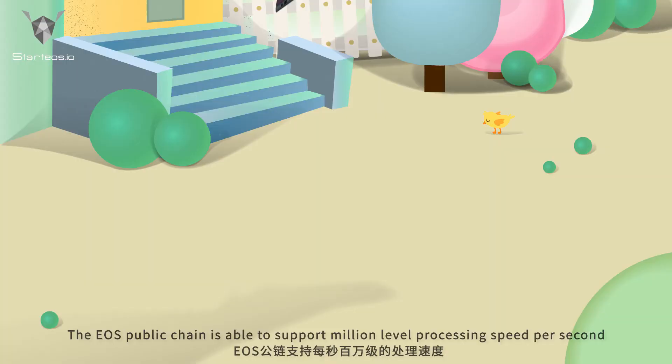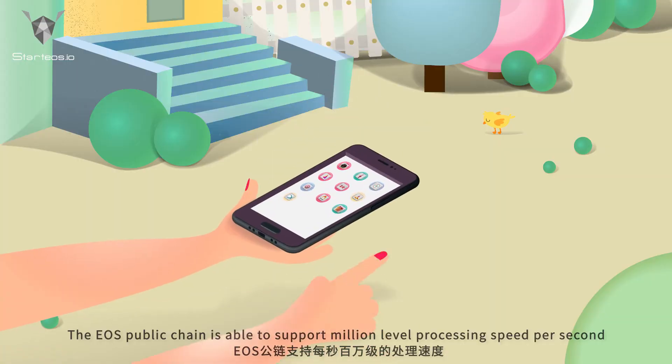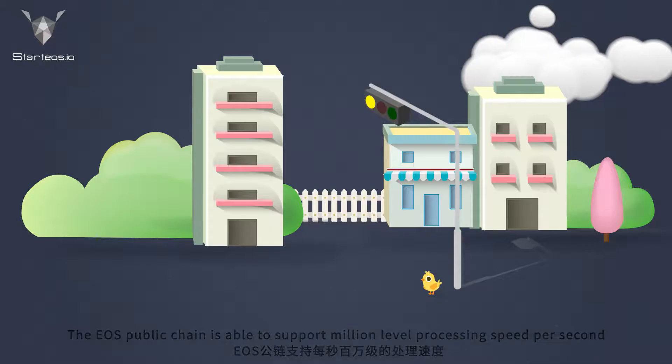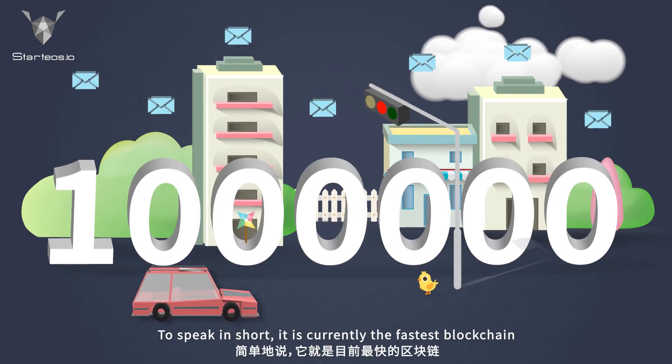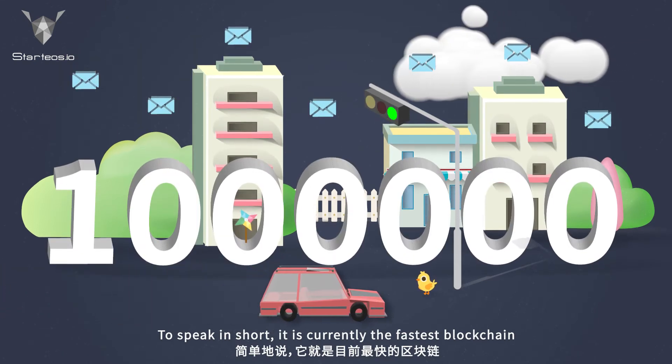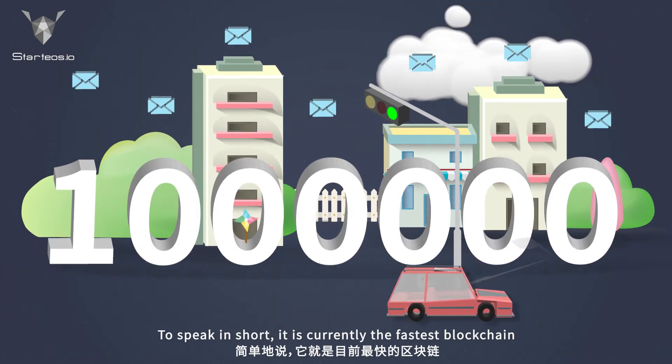The EOS public chain is able to support million-level processing speed per second. In short, it is currently the fastest blockchain.